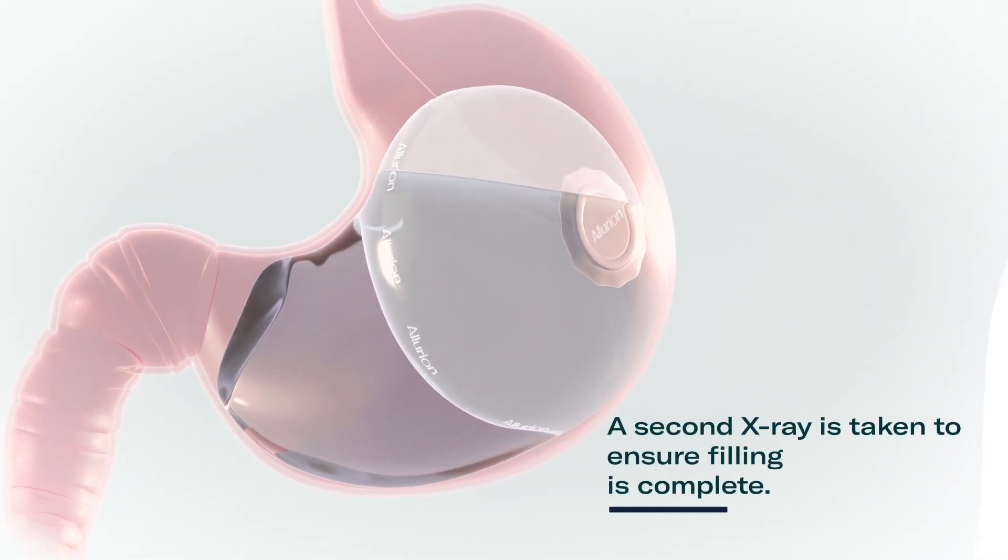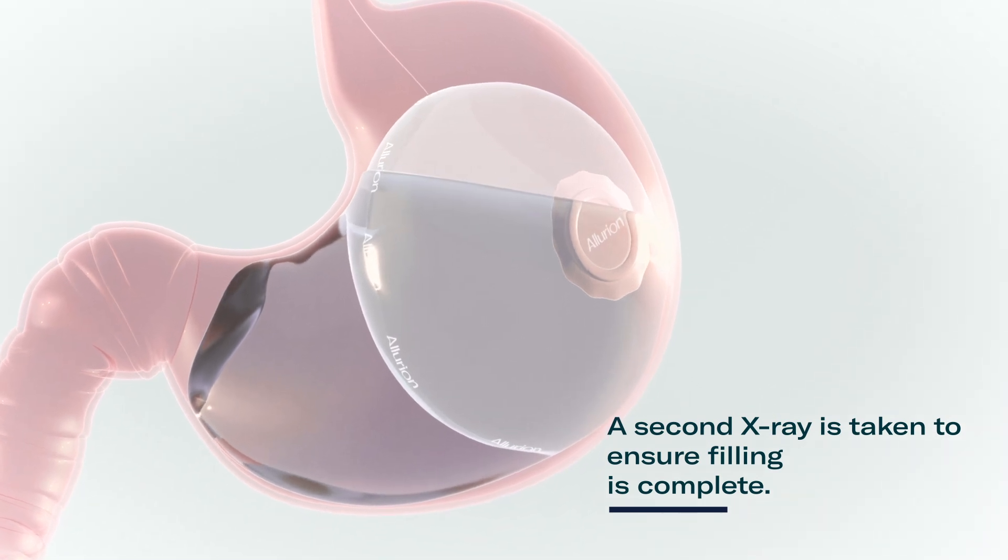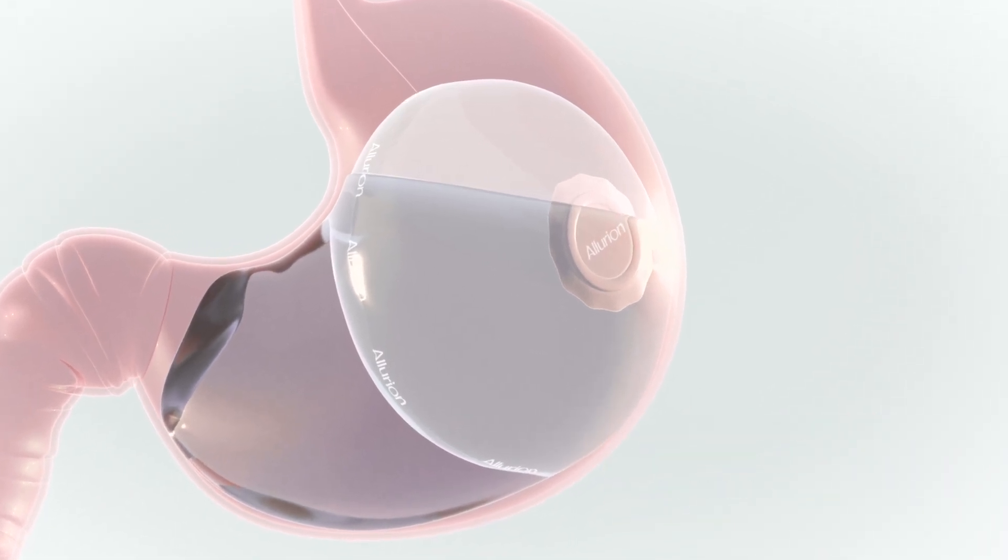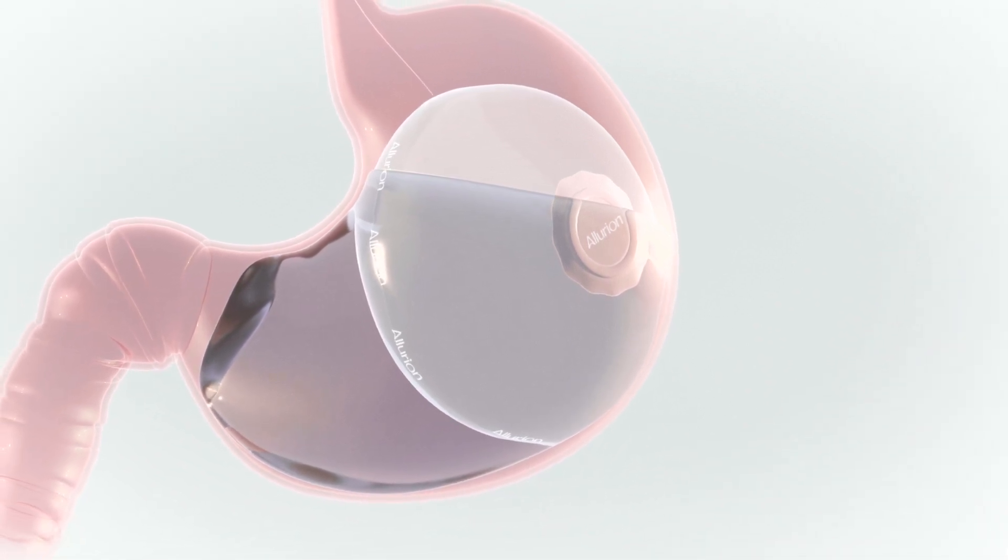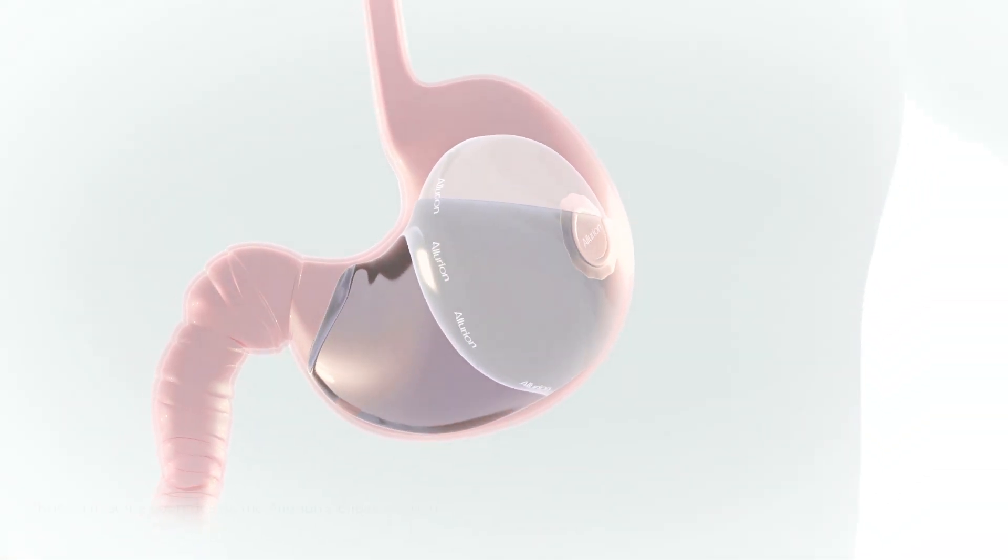Then, a second x-ray is taken to ensure filling is complete. The full balloon is roughly the size of a grapefruit. Your healthcare professional will gently remove the catheter from your mouth. The Allurion balloon placement has now finished.